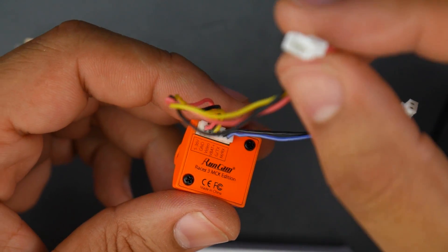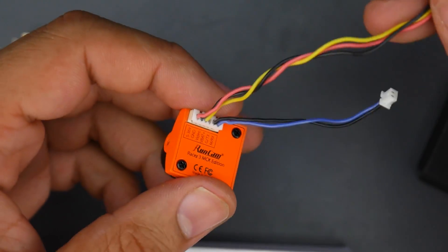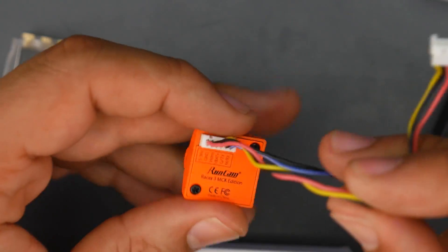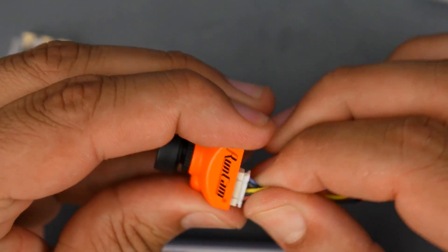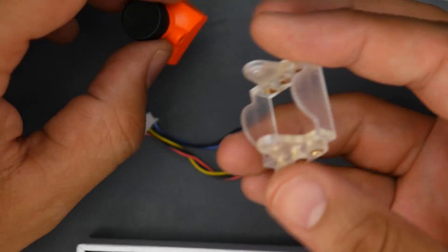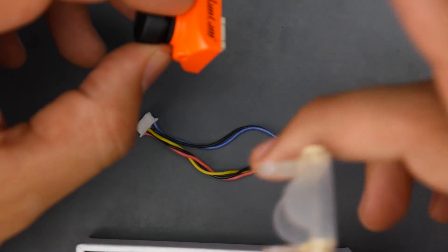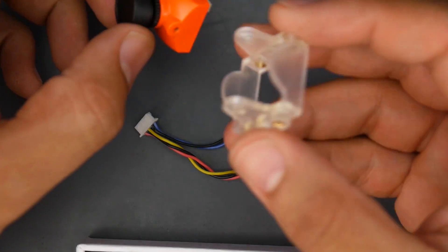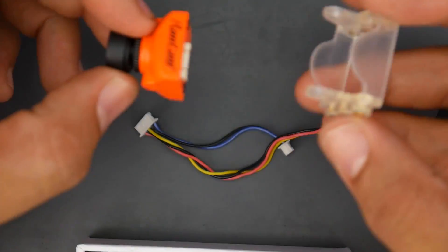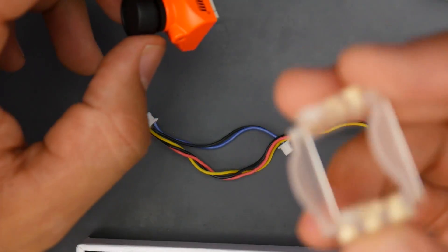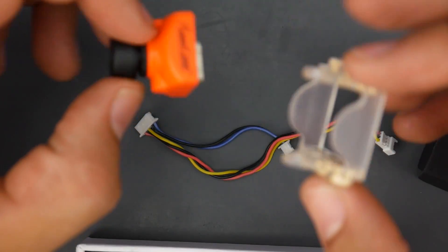It gives us a female type connector in the back. Usually most pilots are going to end up cutting this off and just soldering it directly to their flight controller. They also provide the adapter, and what this little adapter will do is change the size from a mini to a full-fledged HS1177 type camera, which is the normal size big cameras that we rarely see these days.